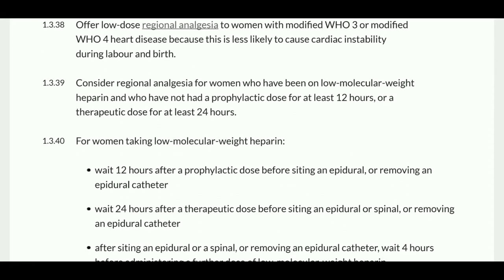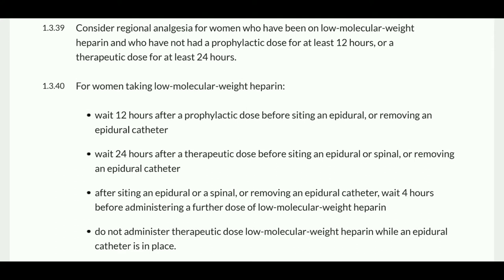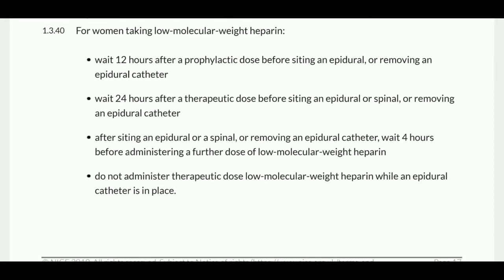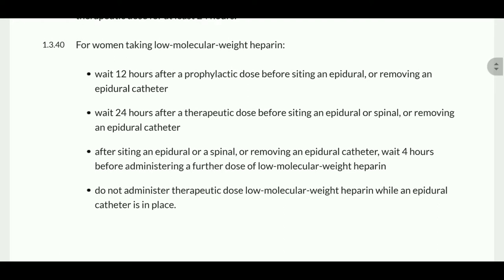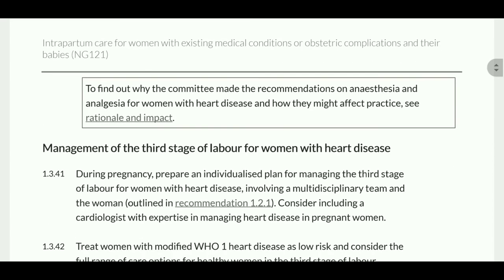Offer low-dose regional analgesia to women with modified WHO 3 or 4 heart disease because high doses are likely to cause cardiac instability during labor and birth. Consider regional analgesia for women who have been on low molecular weight heparin and who have not had any prophylactic dose for at least 12 hours or therapeutic dose for at least 24 hours. When taking low molecular weight heparin: wait 12 hours after a prophylactic dose before siting or removing an epidural catheter, wait 24 hours after a therapeutic dose, and after siting or removing the catheter, wait four hours before administering the next dose of low molecular weight heparin. Do not administer therapeutic low molecular weight heparin while an epidural catheter is in situ.